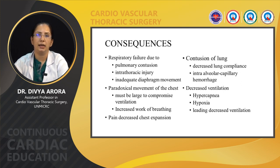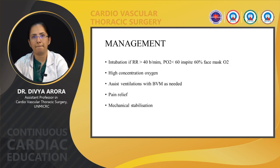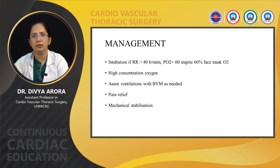Consequences of flail chest include respiratory failure due to pulmonary contusion, intrathoracic injury, and inadequate diaphragm movement. Paradoxical movement of the chest compromises ventilation and increases work of breathing. Pain leads to decreased chest expansion; contusion of the lung leads to decreased lung compliance and intra-alveolar capillary hemorrhage, resulting in hypercapnia, hypoxia, and decreased ventilation. Management includes addressing respiratory rate more than 40 breaths per minute, PO2 less than 60 despite 60% face mask O2, high concentration oxygen, assisted ventilation with bag-valve mask, pain relief, and mechanical stabilization if needed.